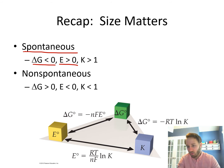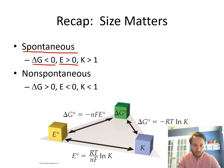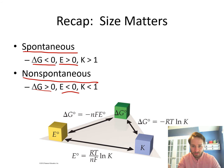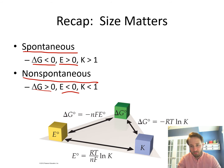For a spontaneous reaction, delta G must be less than zero, the cell potential must be greater than zero, and the equilibrium constant K is greater than one — because for a spontaneous reaction you're forming products, and a large K reflects that. For a non-spontaneous reaction, delta G is greater than zero, the cell potential is less than zero, and K is less than one, meaning you're favoring reactants over products.